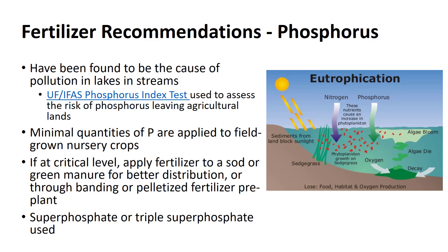Phosphorus fertilizers have been found to be the cause of pollution in lakes and streams. In Florida, the phosphorus index test allows a conservation planner to determine from among a series of proposed phosphorus application sites which sites are potentially most vulnerable to the off-site movement of phosphorus. Fortunately, minimal quantities of phosphorus fertilizers are applied to field-grown nursery crops. When it has been determined that phosphorus in the soil is below a critical level, it is best to apply the fertilizer to a sod or green manure crop grown prior to planting of the nursery crop or through banding or pelletized fertilizer pre-plant.